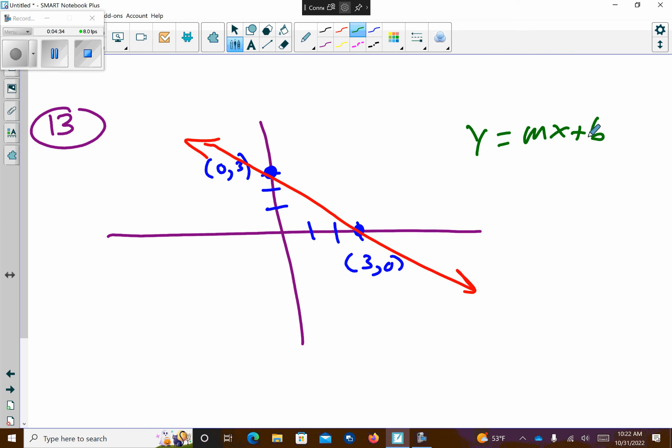The y-intercept is what point up there? 0, 3 or 3, 0? 0, 3. So my y-intercept, this is going to be my b value. So so far I know I have plus 3. I know I have y and then I have an x. Let's figure out our slope. So if I slope, if I go down 1, 2, 3, I went down. And then I go right 1, 2, 3. So I went down 3, right 3.